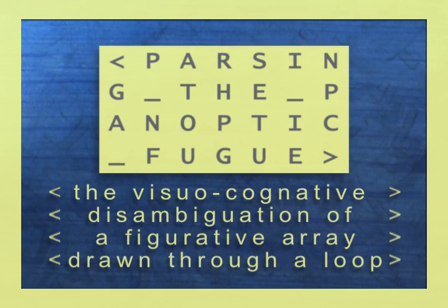Parsing the Panoptic Fugue: the visual-cognitive disambiguation of a figurative array drawn through a loop.